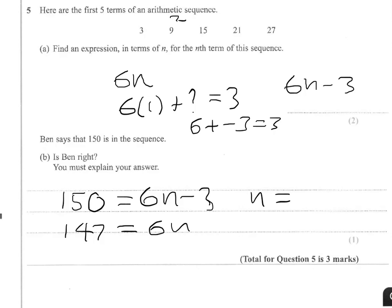And so n would equal 147 divided by 6. So does 6 go into 147 exactly? So 6 into 14 goes twice with remainder 2. 6 does not go into 27.